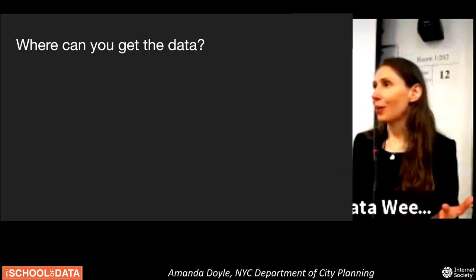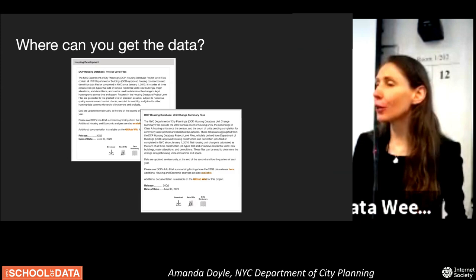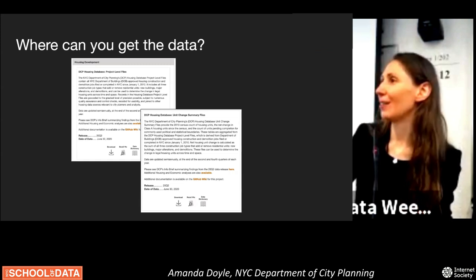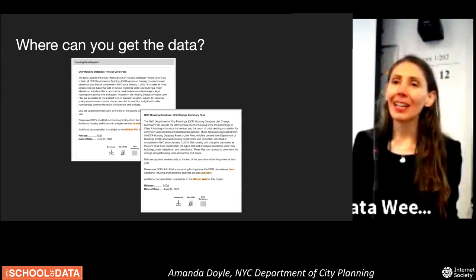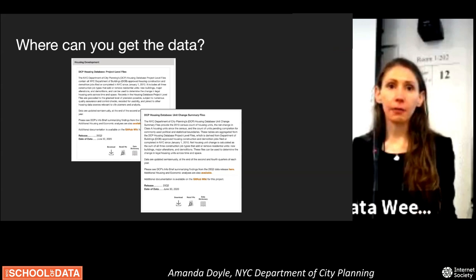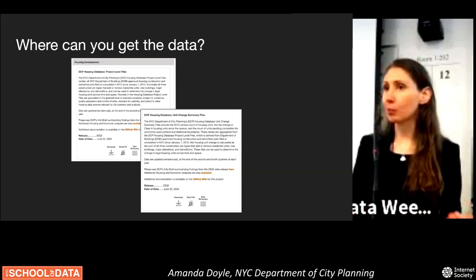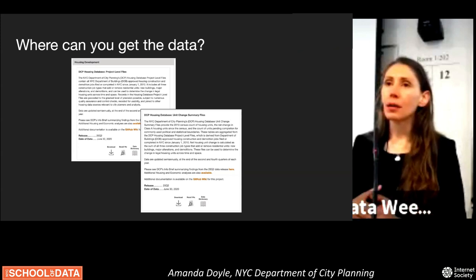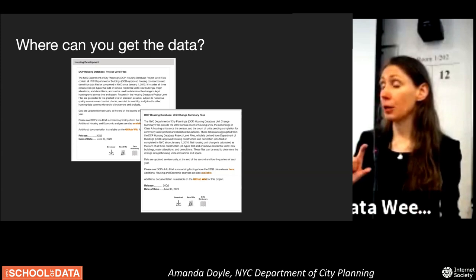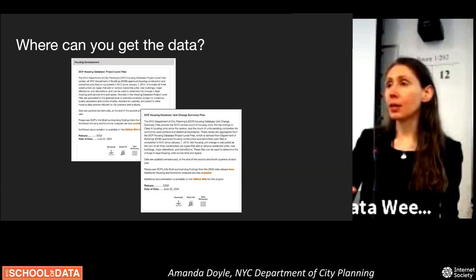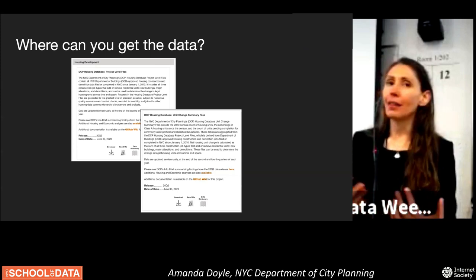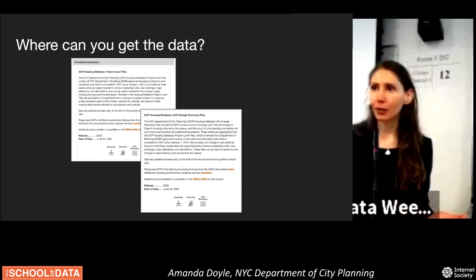You can find the housing database on Bytes of the Big Apple, and also on NYC Open Data which loops back to Bytes of the Big Apple — they said 'you guys host it yourselves.' You can download the record-by-record files — each job application from 2010 to present — or as Max presented, you can download the unit change summary files. If you don't care about every individual job application and just want to know how many units have been added or removed by geographic area, you can download that shapefile or CSV and pop it into your GIS software of choice.